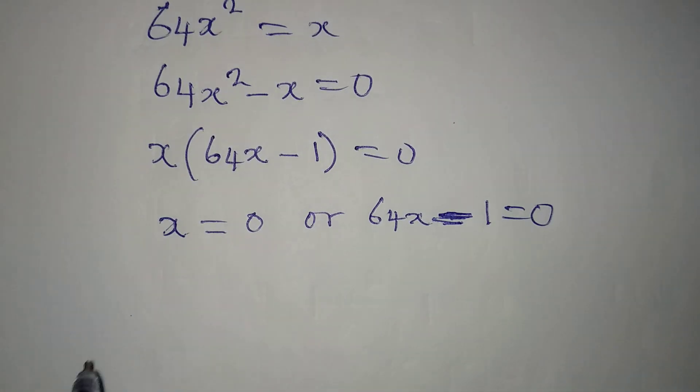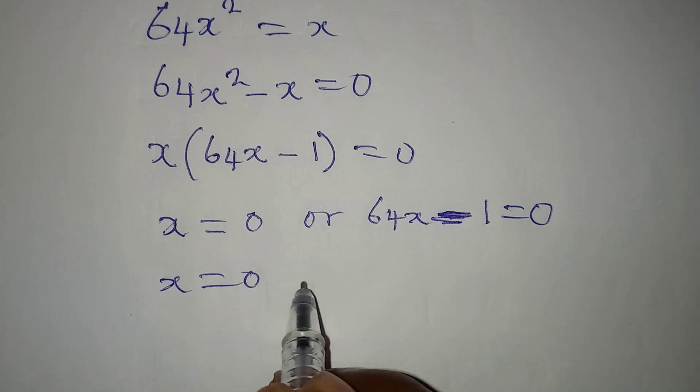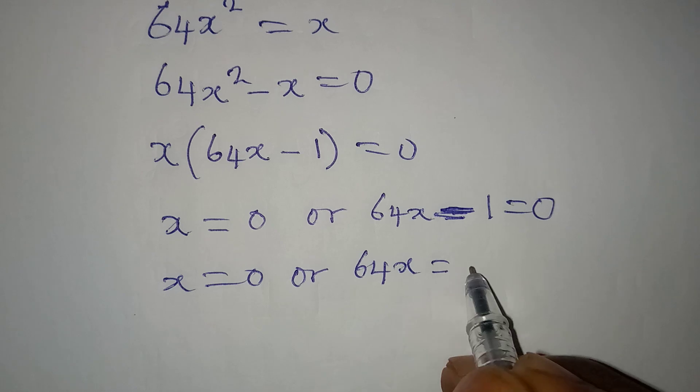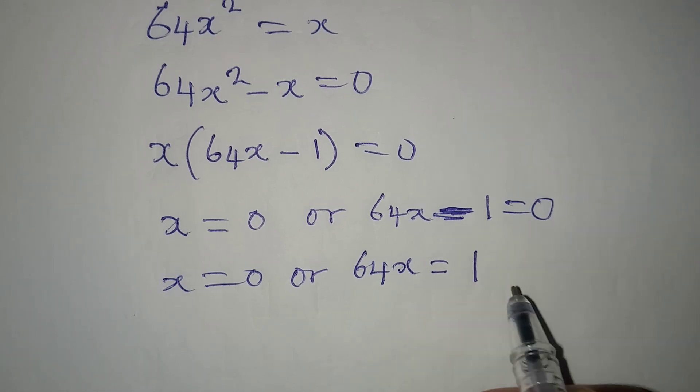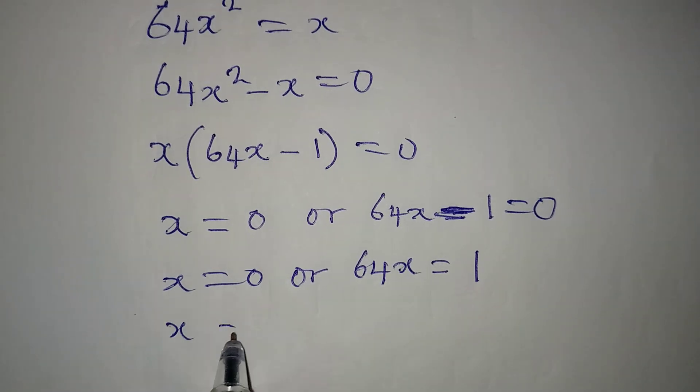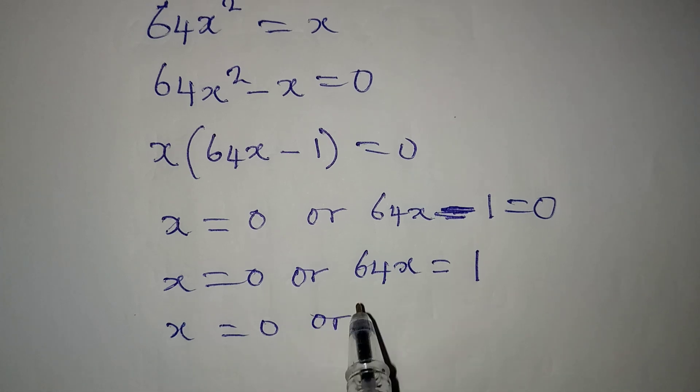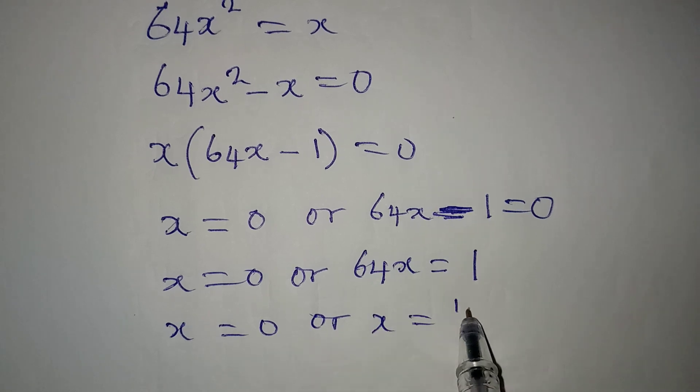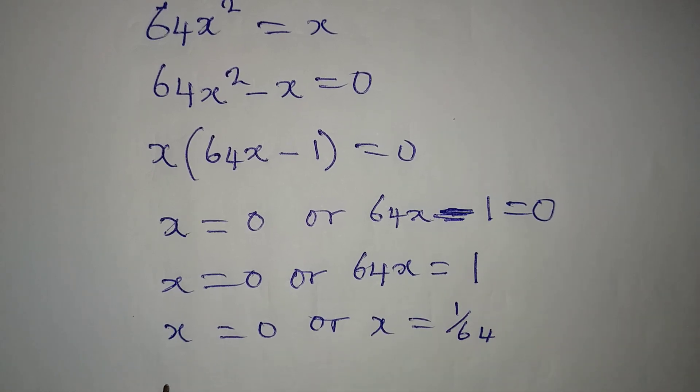x remains 0 or 64x is equal to 1. Now x is equal to 0, or we divide this by 64, so x will be 1 over 64.